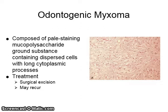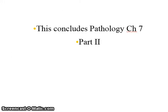Microscopically, the odontogenic myxoma is composed of pale-staining mucopolysaccharide ground substance containing dispersed cells with long cytoplasmic processes. It is treated with surgical excision and may recur. This concludes Pathology, Chapter 7, Part 2.